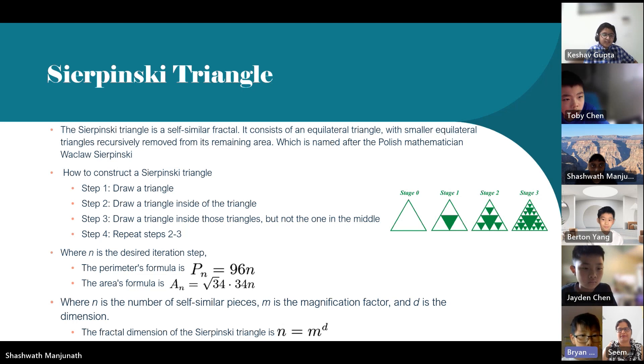How to construct the Sierpinski Triangle. The first step is to draw a triangle. Then you have to draw a triangle inside the triangle that connects the edges. And then the third step is to draw a triangle inside of those triangles, but not the one that you have just made in the previous step. And then the last step is to consistently repeat step two and three until you want to stop.